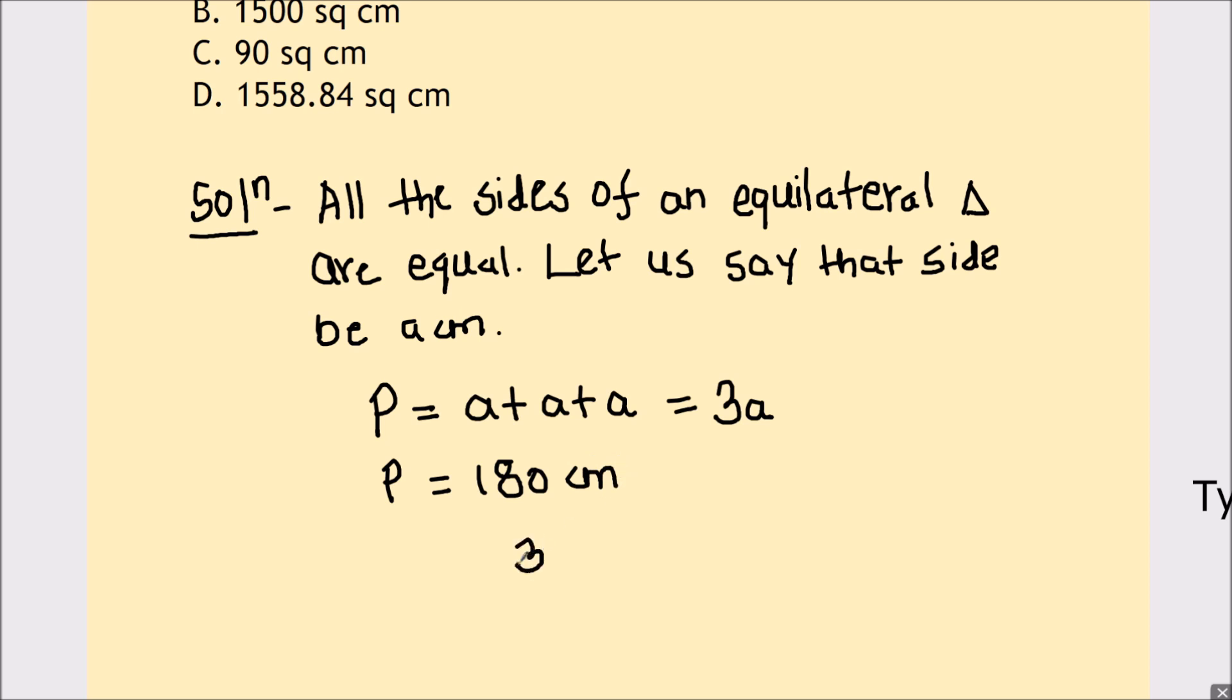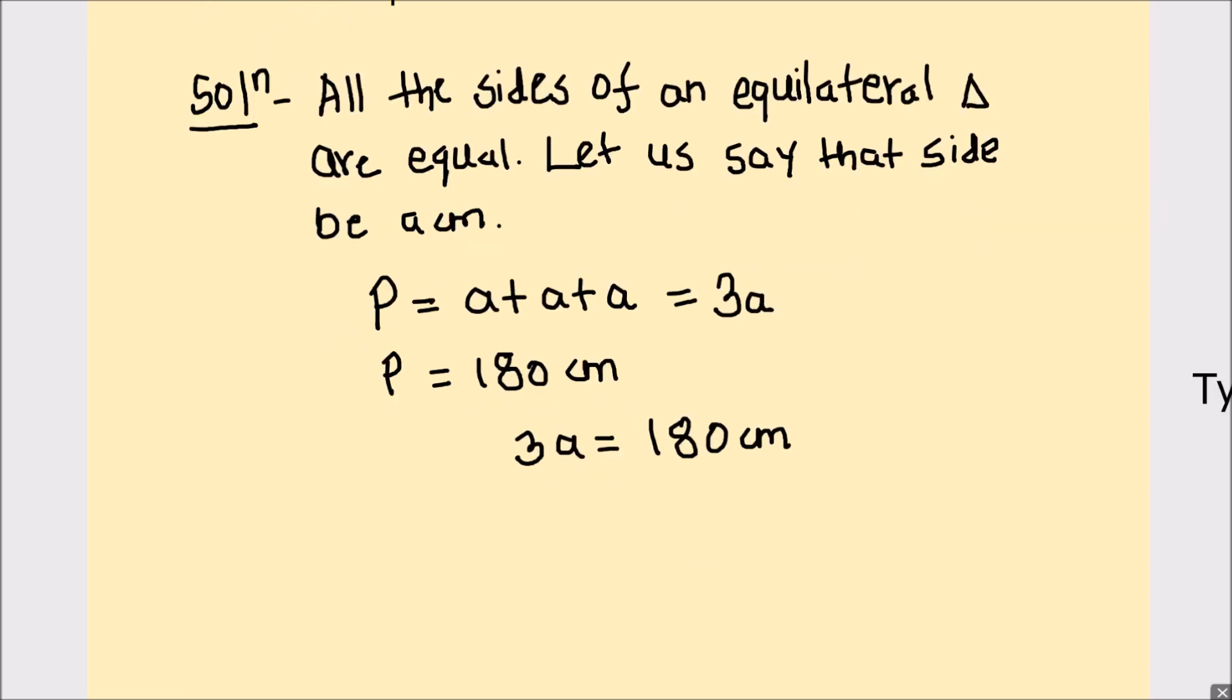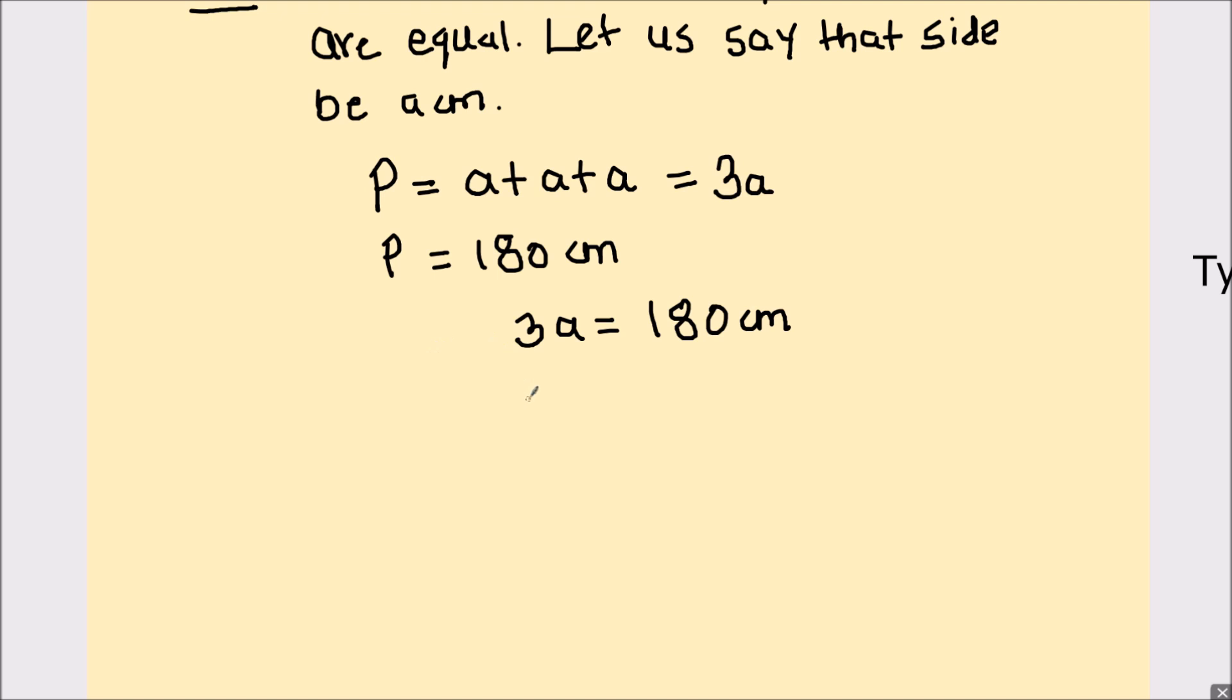So 3a will be equal to 180 cm from where we can find the value of a which is the side of the triangle. So a will be equal to 180 divided by 3 which equals 60 cm. Now we get the side length of the triangle which is 60 cm.